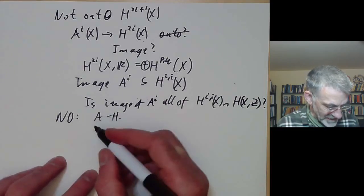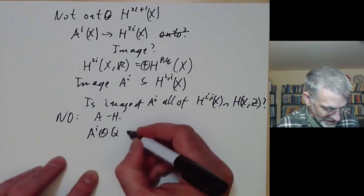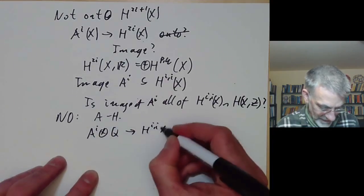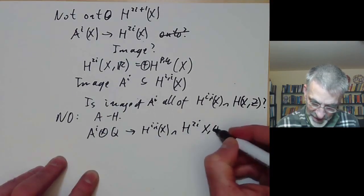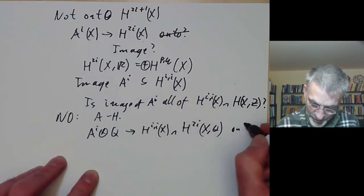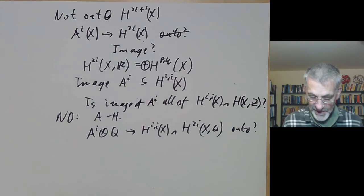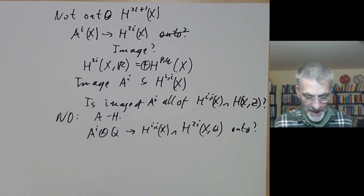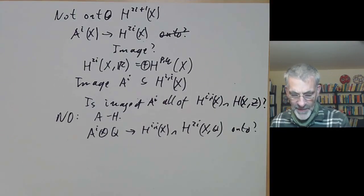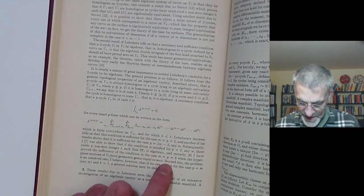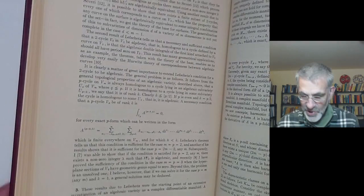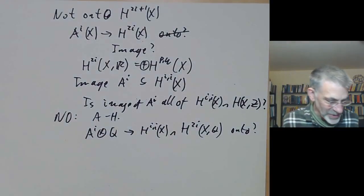There is a slightly modified version of this conjecture: is the map from A^i tensored with the rationals to H^{i,i} of X intersected with H^{2i} of X with rational coefficients surjective? This is the famous Hodge conjecture, which is a really hard unsolved problem. Incidentally, it's not at all clear that Hodge ever actually conjectured this. Looking at what Hodge wrote, he's discussing the problem and says that beyond a few cases with a positive solution, the problem is an unsolved one — he doesn't actually conjecture it's true. So it should really be called Hodge's question rather than Hodge's conjecture.